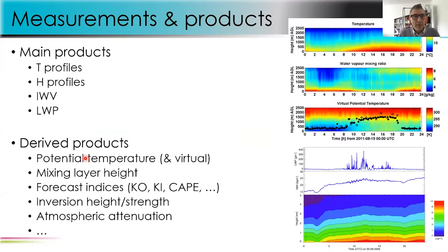From the main products, you can also infer derived products — for example, potential temperature and virtual potential temperature, mixing layer height, forecast indices that are usually used with radiosondes like the KO index, K index, or CAPE. You can also estimate inversion height and strength, and atmospheric alternation and so on.